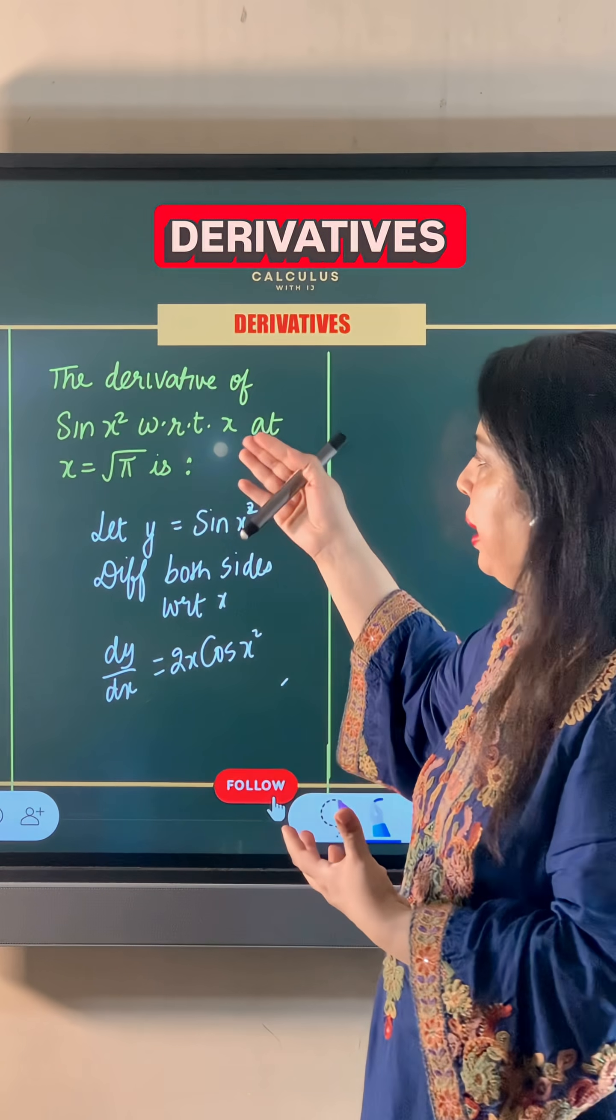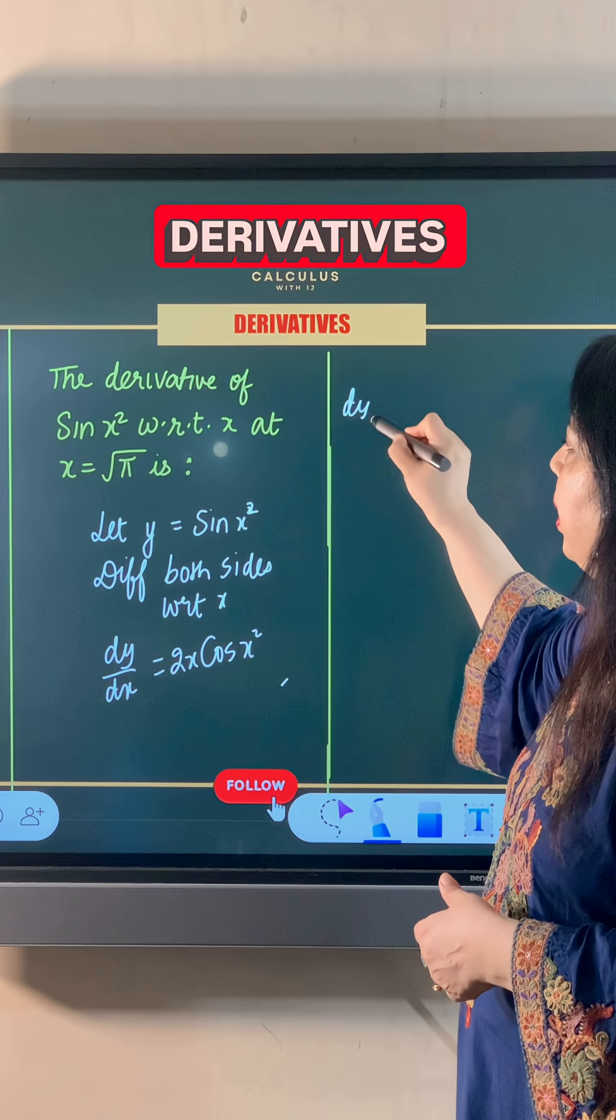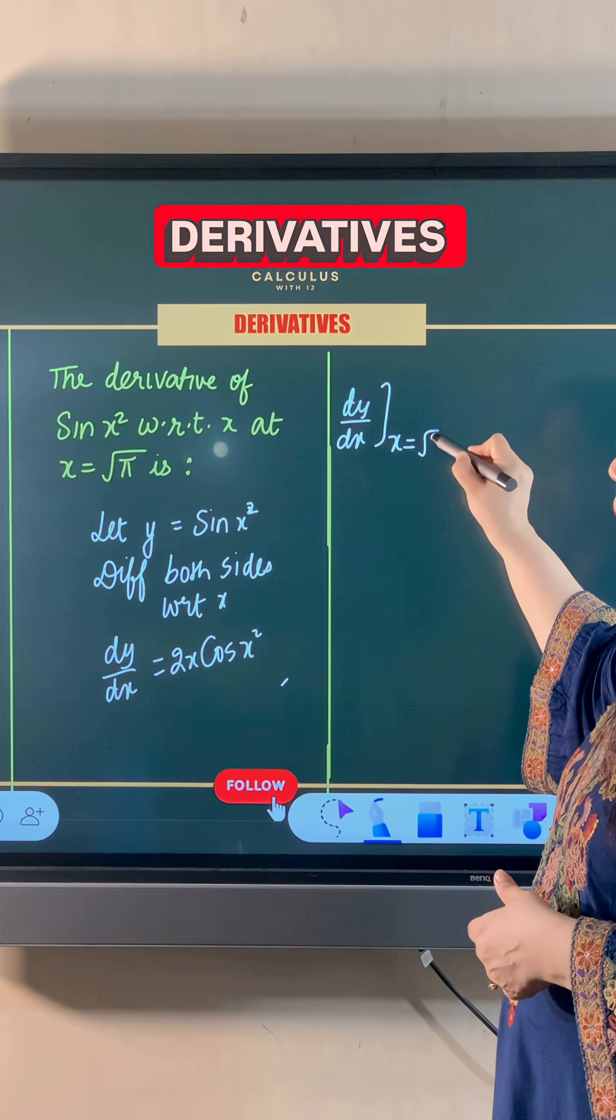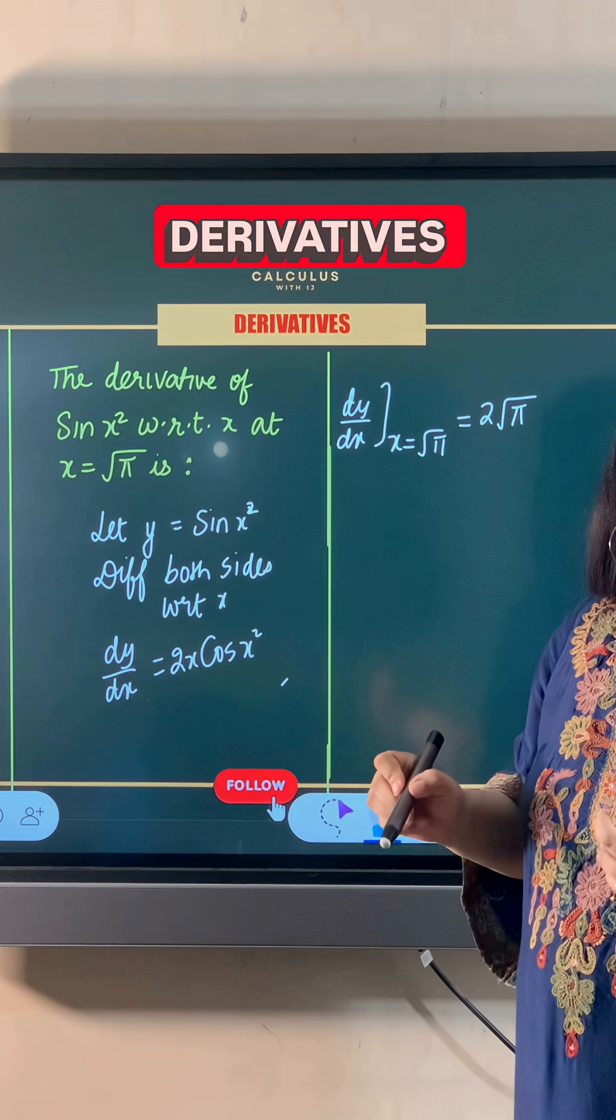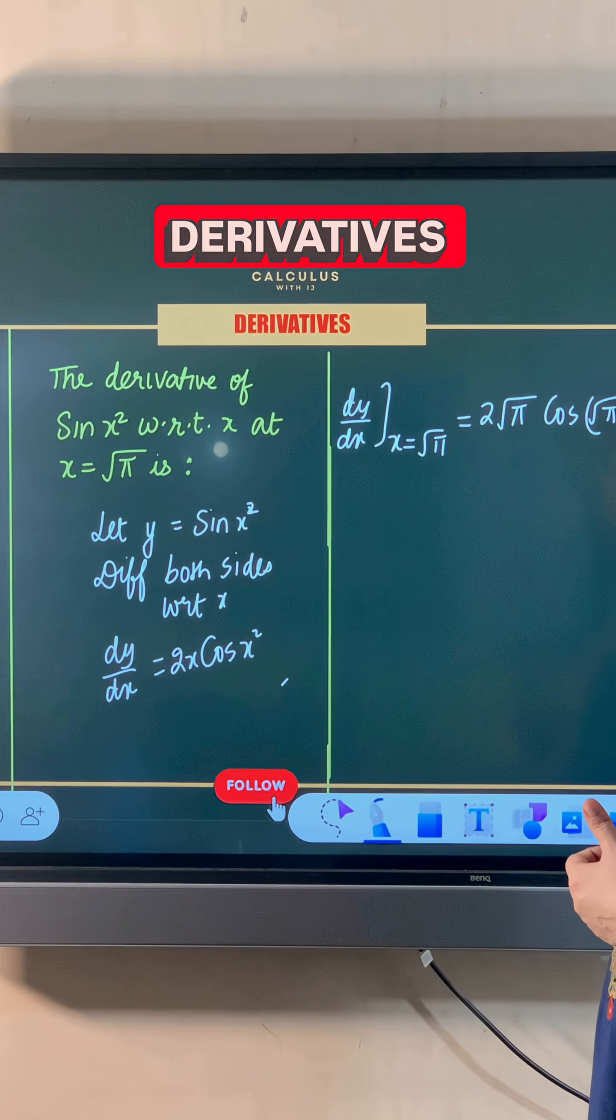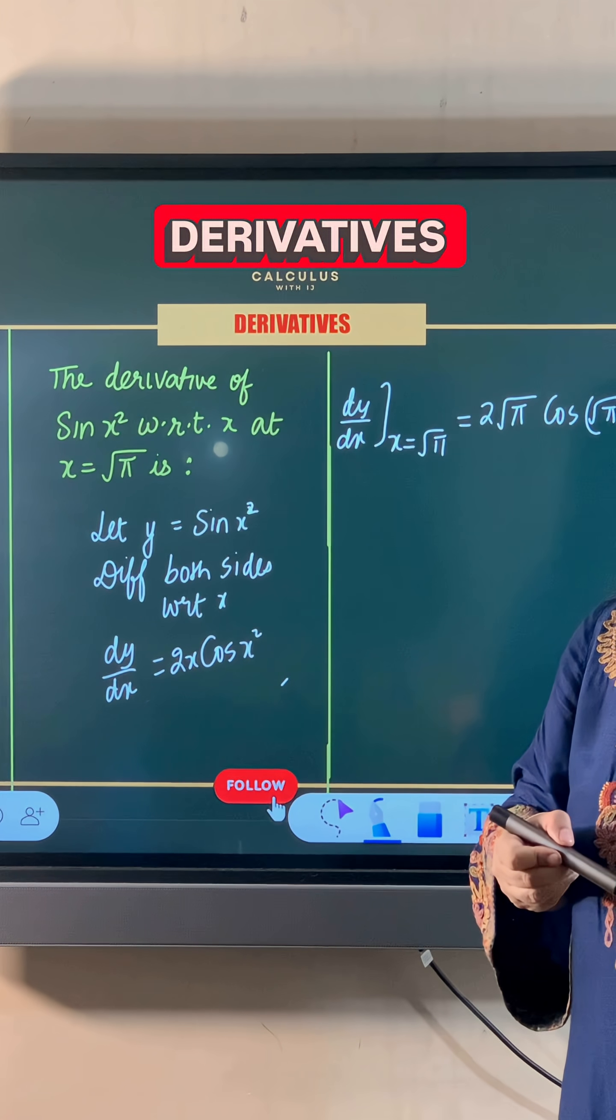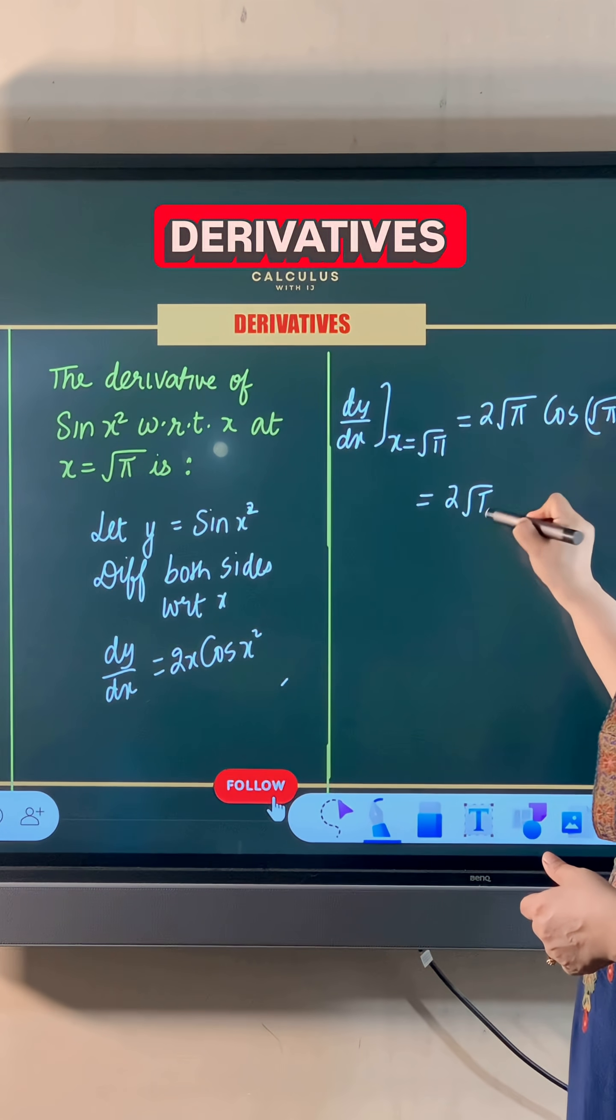Now we have to find this value at x equals √π. So let's put x equals √π in the derivative. That gives us 2√π cos(√π)². Now (√π)² is simply π, so this becomes 2√π cos π.